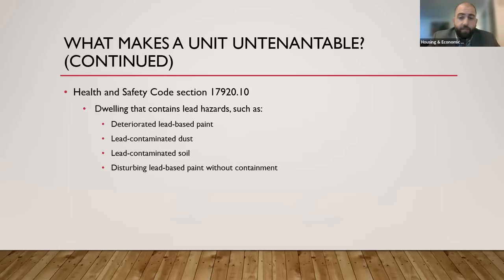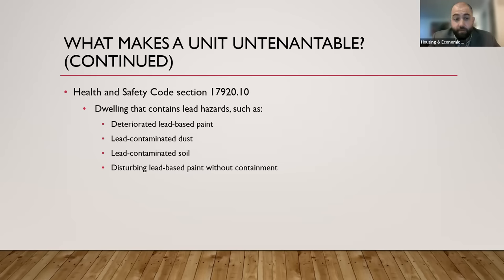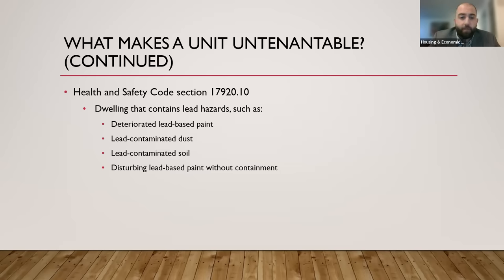Health and Safety Code Section 17920.10 addresses lead contamination. It's not necessarily a problem if your home was painted with lead-based paint; however, if the paint starts deteriorating, chipping off, creating dust that may be contaminated with lead, or contaminating the soil, those are habitability issues. Disturbing lead-based paint without containment is also an issue — proper safety measures must be taken to contain the lead being shed.